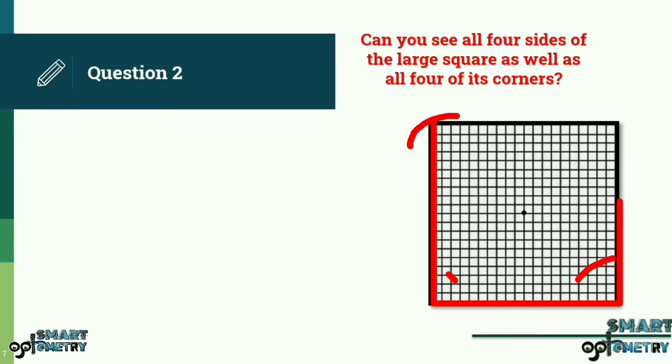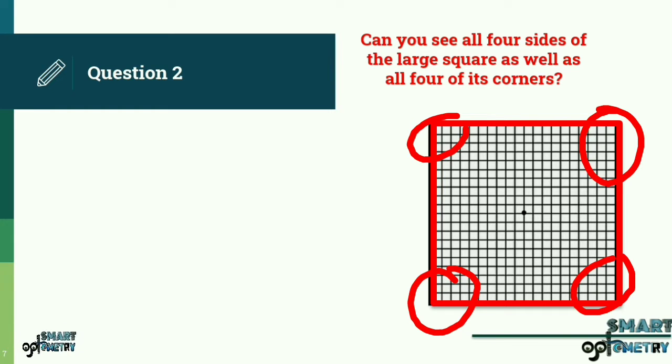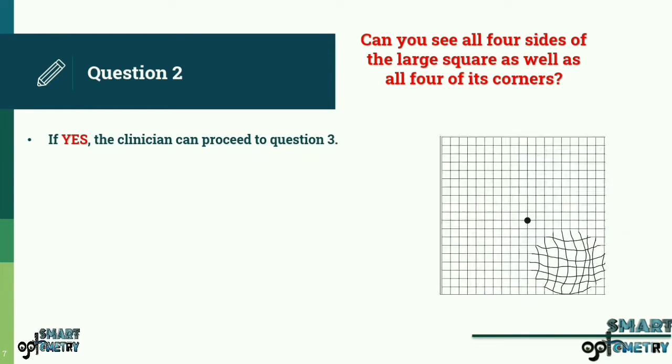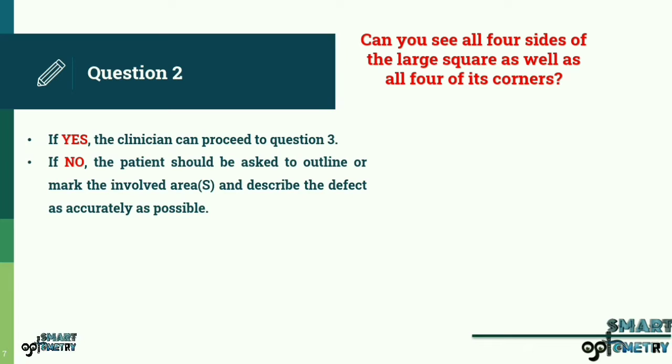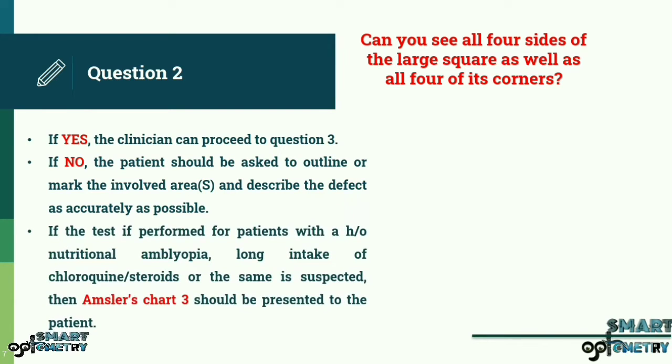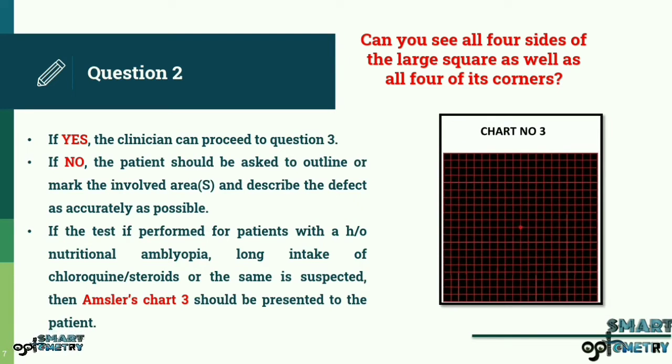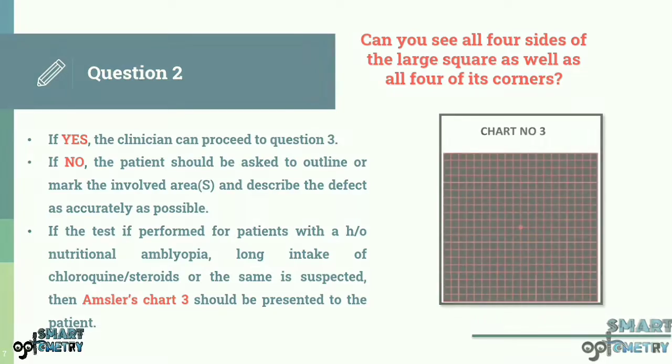Question 2: Can you see all four sides of the large square as well as all four of its corners? The patient is asked to continue looking at the central dot while answering. If yes, the clinician can proceed to question 3. If no, the patient should be asked to outline or mark the involved area or areas and describe the defect as accurately as possible. Example: left corner of the chart is covered by the black or white wavy cloud on looking at the white dot, etc. This information may greatly assist the clinician in establishing a diagnosis. If the test is performed for patients with a history of nutritional amblyopia, long intake of chloroquine or steroids, or the same is suspected, then Amsler's chart 3 should be presented to the patient.